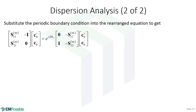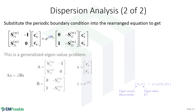Applying that periodic boundary condition to our near-transfer-matrix equation, we arrive at a generalized eigenvalue problem of the form A·x = lambda·B·x, where there is a square matrix on both sides. Here lambda is the eigenvalue — not wavelength — and we build matrices A and B directly from the scattering matrix elements.